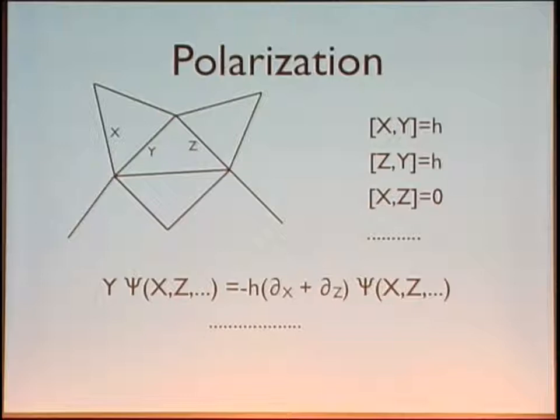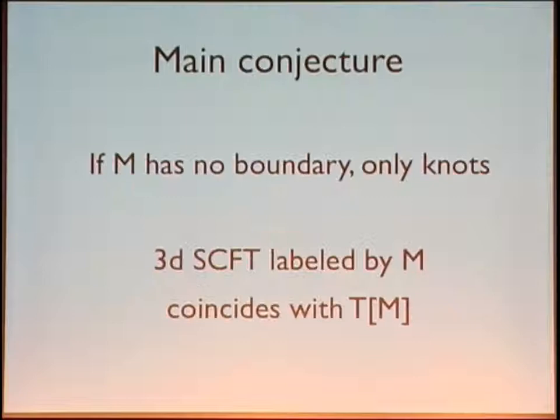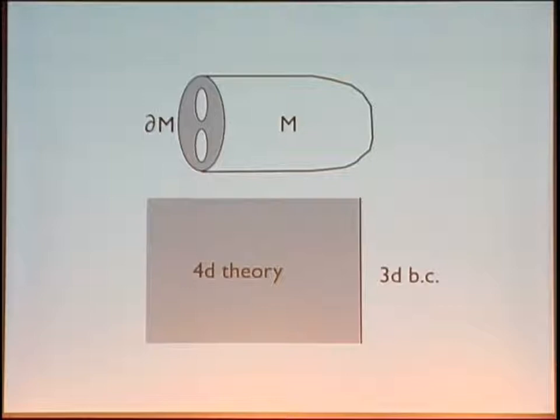Once you give this data, you can get a specific three-dimensional theory. By construction, this three-dimensional theory has the property that the partition function on the ellipsoid is the same as the SL(2) Chern-Simons wave function. Here we get to the conjecture: if the manifold has no boundaries, only knots inside, then these three-dimensional theories coincide with the theories that Sergei was talking about, the T[M] theories — the theory associated with the 6D theory compactified on the manifold M.